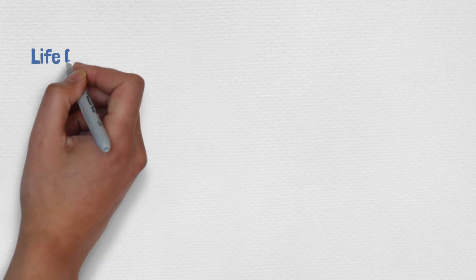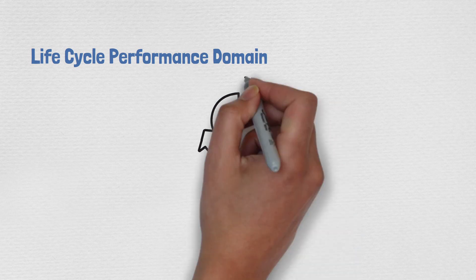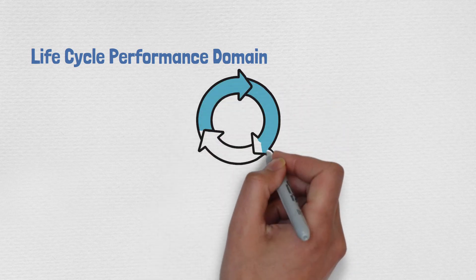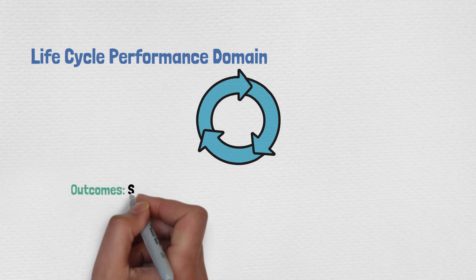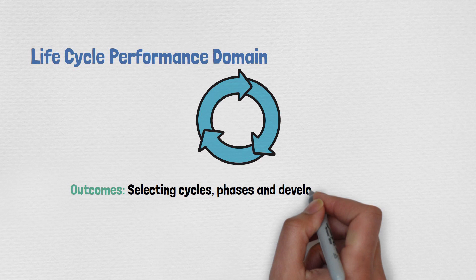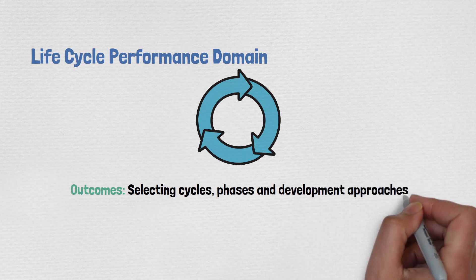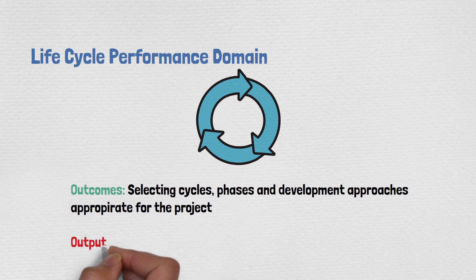The Lifecycle performance domain is about selecting the best approach suited to the nature of your project. The outcome is selecting the cycles, cadence, and development approach appropriate to the project. I'll leave the PMBOK 6 outputs as homework — try to comment what you think the outputs were under the lifecycle approach.